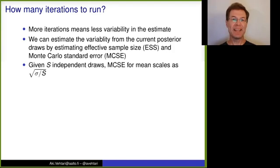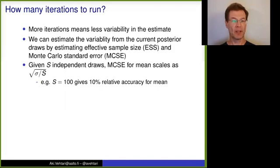If we would have independent draws, finite number of independent draws, in this case S draws, the Monte Carlo standard error for mean scales as square root of posterior scale divided by S. And so from this, we can conclude that 100 independent draws from the posterior would give us 10 percentage relative accuracy for mean, and here the relative being relative to the posterior scale. And so often this would be sufficient for one significant digit accuracy.